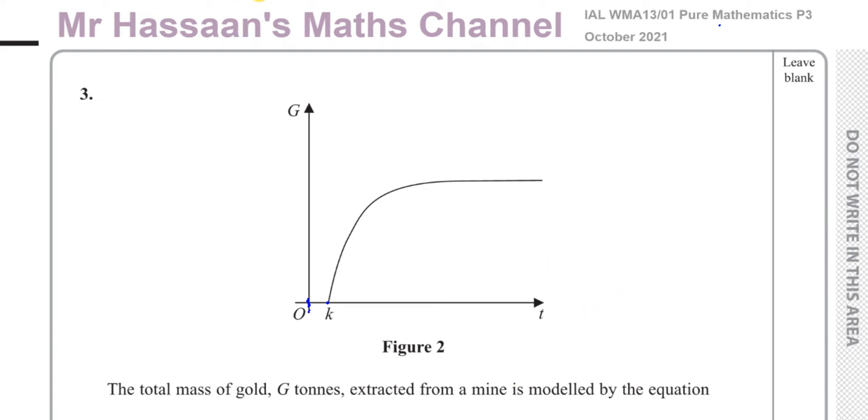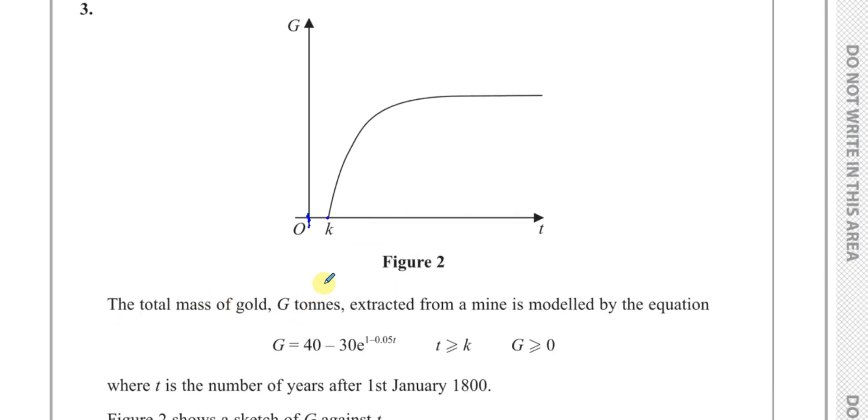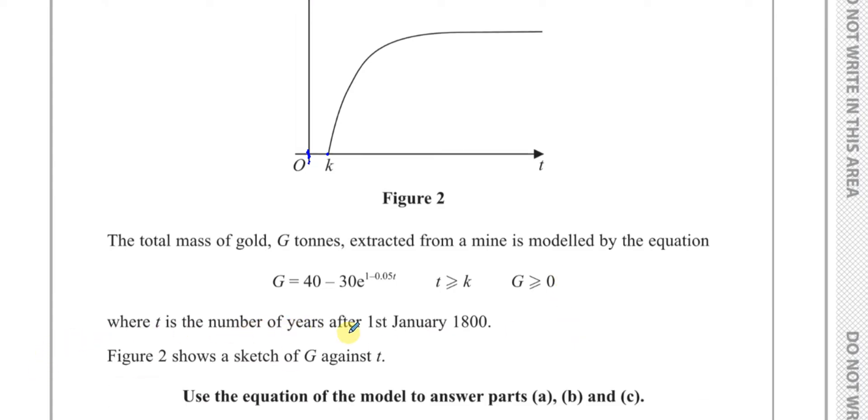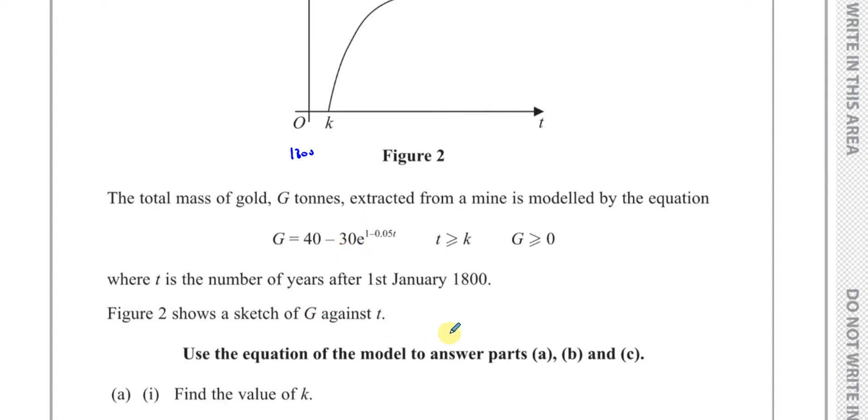Welcome back, this is Mr. Hassan's Maths Channel and I'm on question number 3 now from the Pure Mathematics P3, October 2021 International A-Level Edexcel exam. This question is about exponential growth. It says the total mass of gold G tons extracted from a mine is modeled by this equation: G equals 40 minus 30e to the power of 1 minus 0.05t, where t is greater than or equal to k and G is greater than or equal to 0. t is the number of years after the 1st of January 1800. Figure 2 shows a sketch of G against t. Use the equation of the model to answer parts a, b, and c.